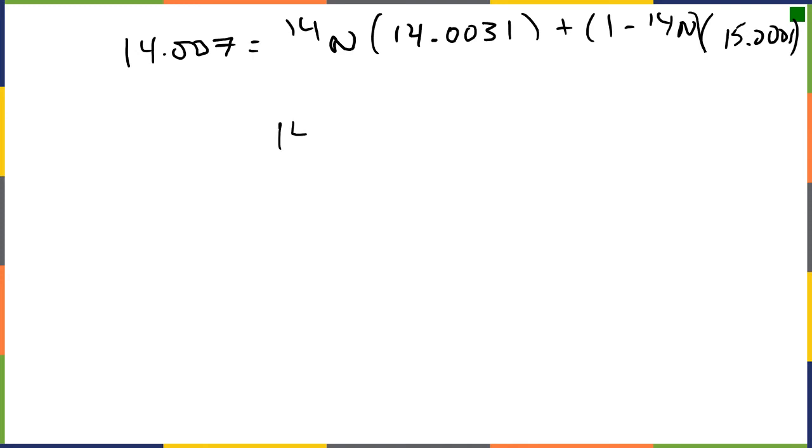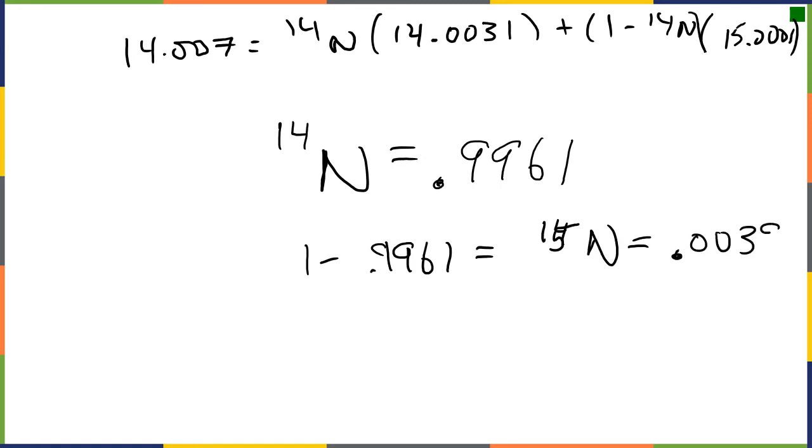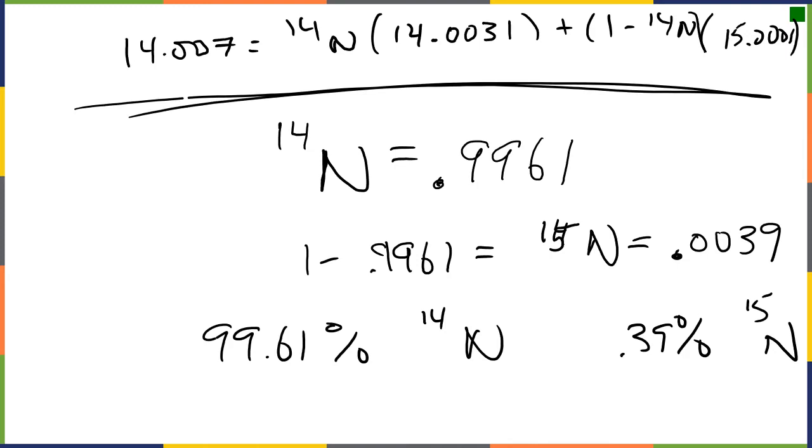I'm going to find the fraction that is nitrogen-14 is going to equal 0.9961. If I want to figure out how much is nitrogen-15, I'm going to take one minus that. And I'm going to get the fraction of nitrogen-15 is equal to 0.0039. And so my two compounds or my two isotopes here are 99.61% abundance of nitrogen-14 and 0.39% abundance of nitrogen-15. So if we're given some masses, we can actually figure out our percent abundances.